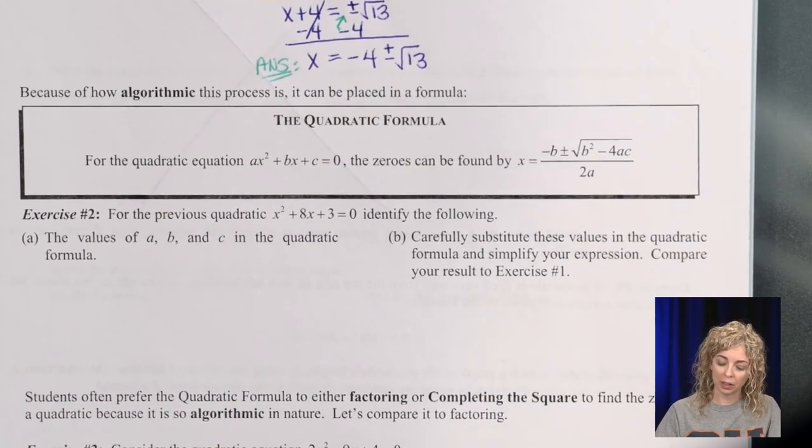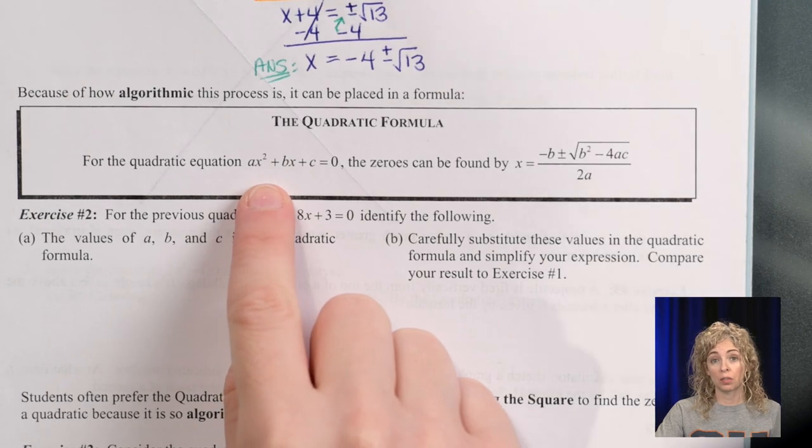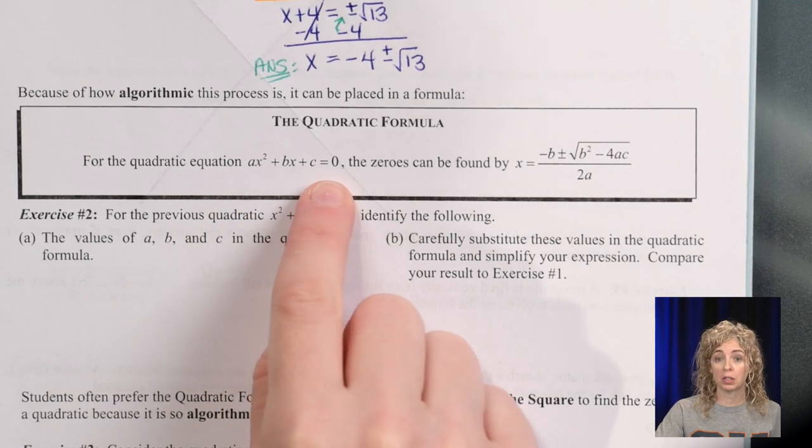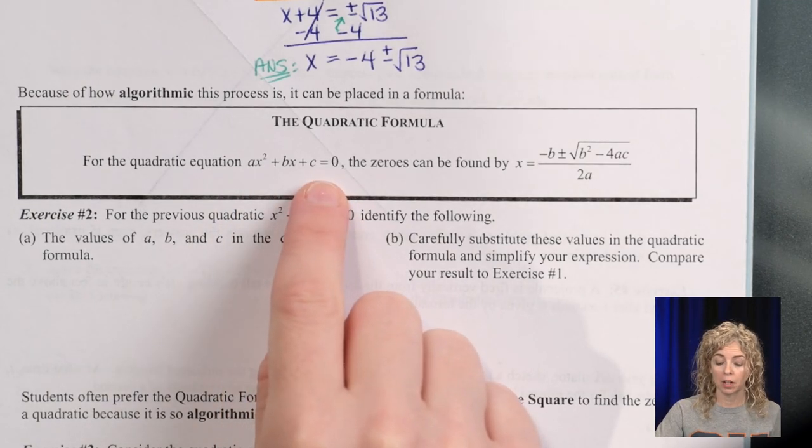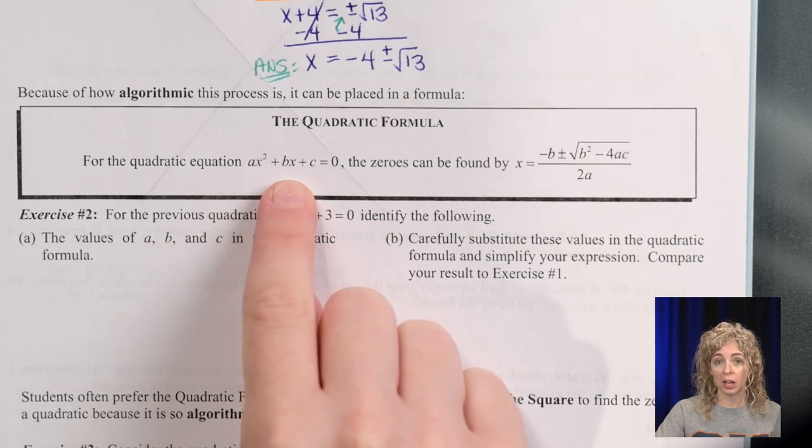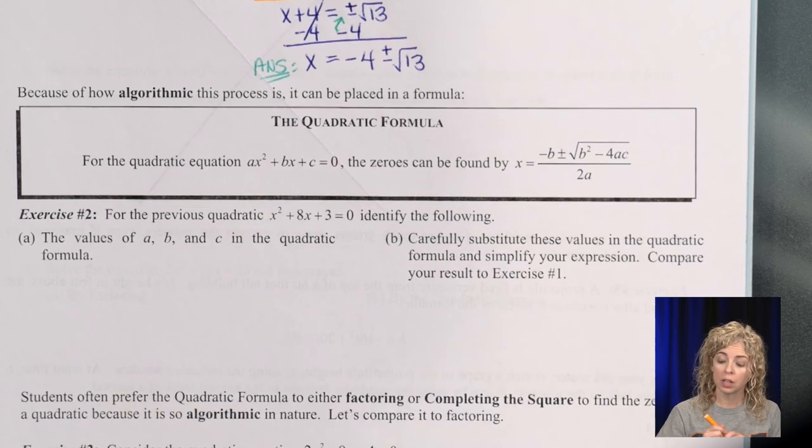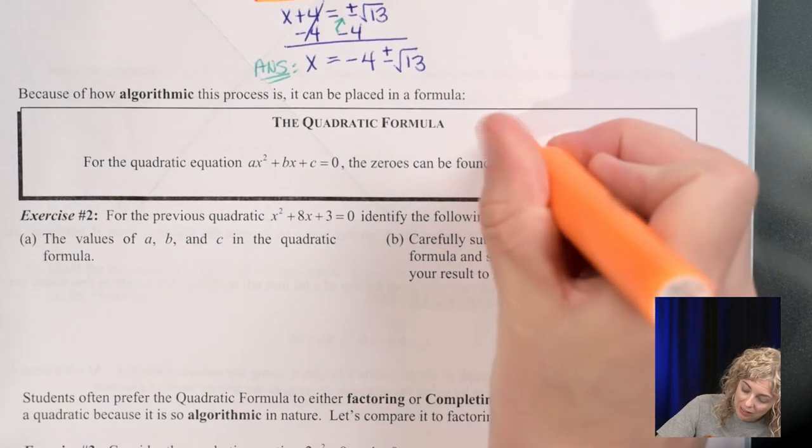So now the formula. The quadratic formula for a quadratic equation in standard form, so it must be equal to 0. That's important. Remember that a is the number before the x squared, the b is the number before the x, and the c is the last number. And if there is no last number, then c is 0.